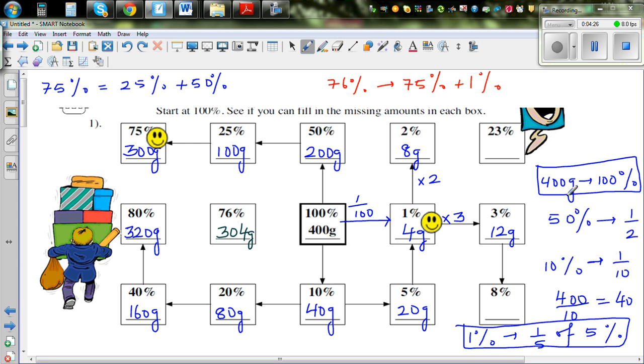23%. Do we know 20%? Let me draw a star. Can you find 20% somewhere? Well, this is 20%. And do we know 3%? Yes, we know 3%. So 20% and 3% gives you 23%, so this is 92 grams.